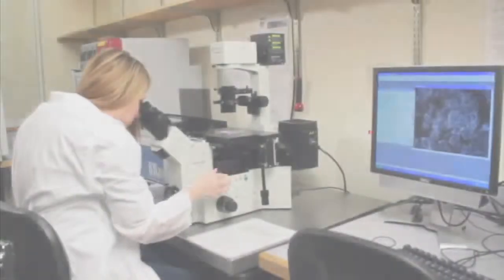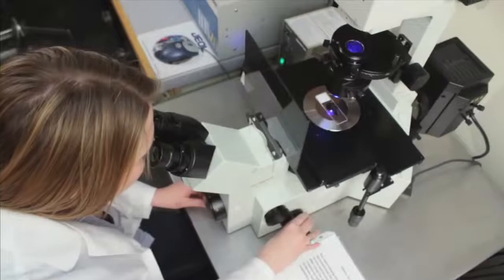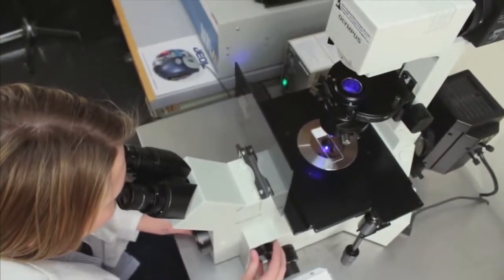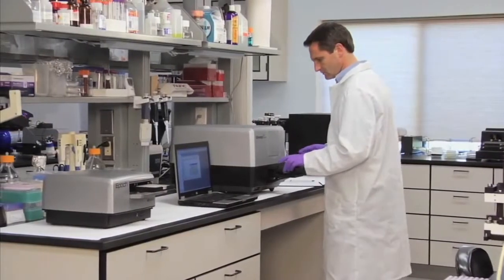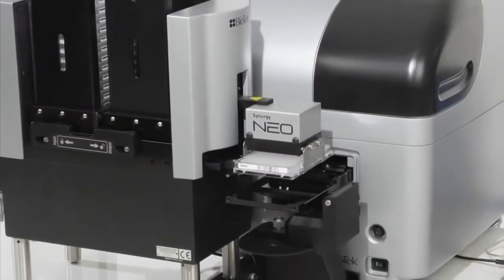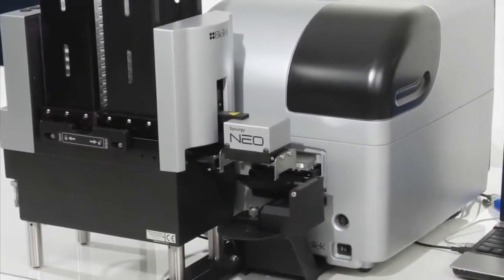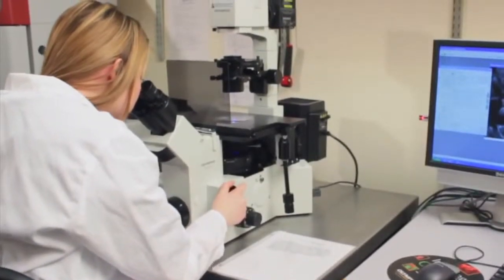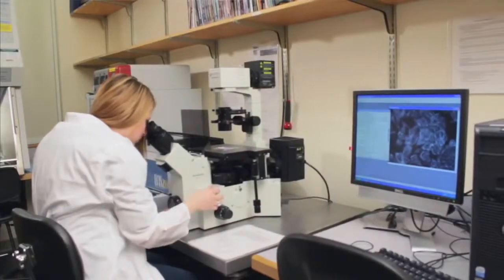Fluorescence microscopy is a powerful technique for visualizing cellular responses in cell biology research. Multimode microplate detection is a common method for rapid quantification of cellular activities in microplates. Typically, these two techniques are performed in separate instrumentation and require independent analysis.